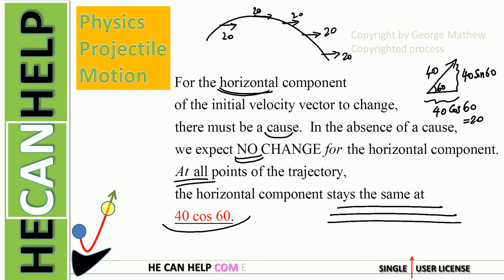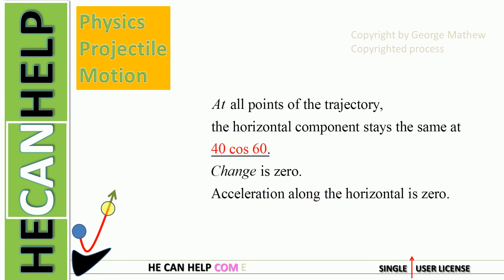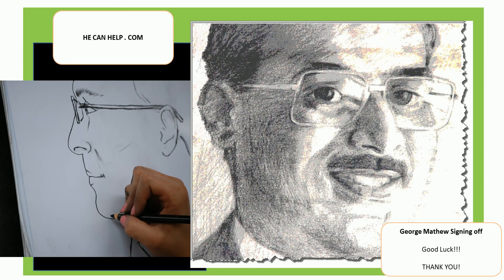The horizontal component stays the same forever — at all points of the trajectory, 40 cosine 60, which is 20 meters per second. The change is zero if the horizontal component is constant. So what is the acceleration along the horizontal? It is zero. This is George Matthew supporting you. Good luck.